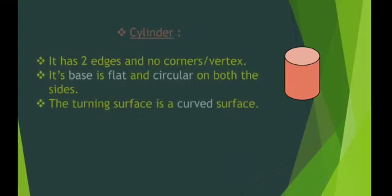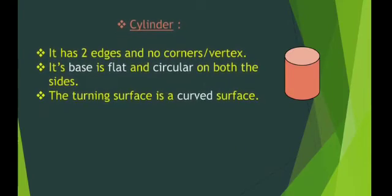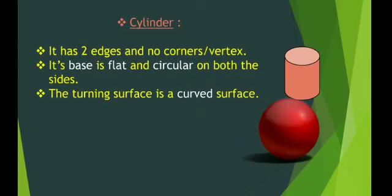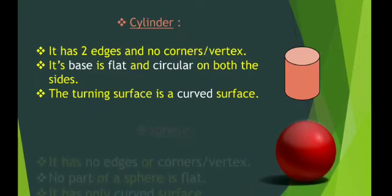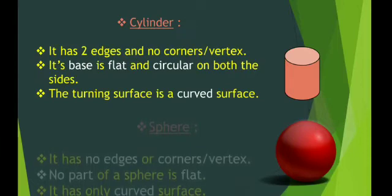This is a cylinder. Now a cylinder has two edges and no corners. Its base is flat and circular on both the sides. The turning surface is a curved surface.